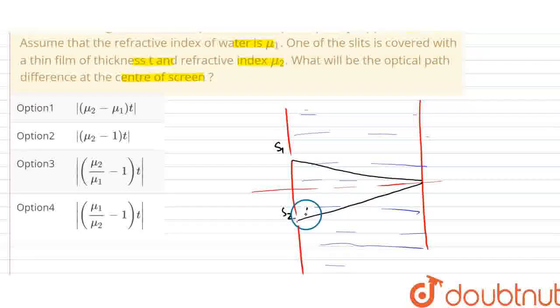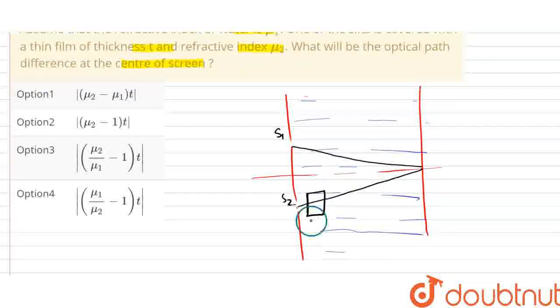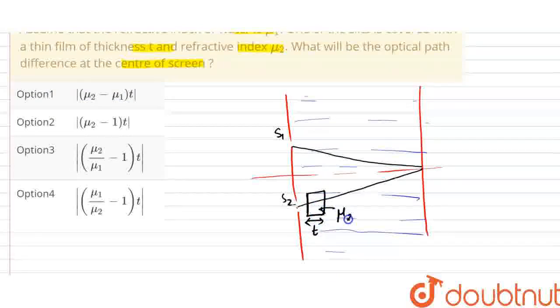adding a layer, we have a thin film covering one of the slits. This is a film which has thickness t and the refractive index is mu2, and